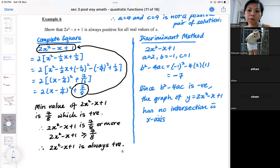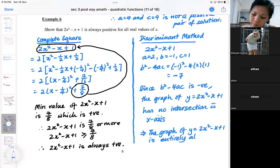When your discriminant is negative, it essentially means that the whole graph doesn't intersect. When the whole graph doesn't intersect, that means the graph is entirely above the x-axis.